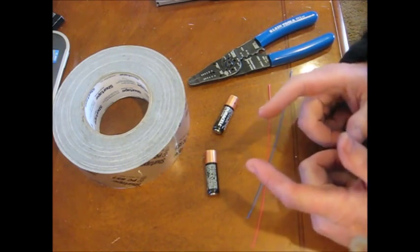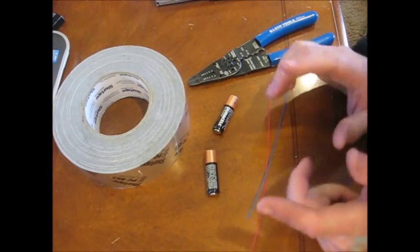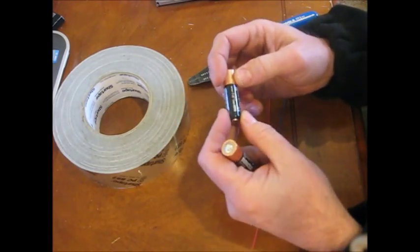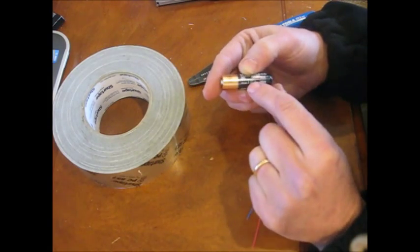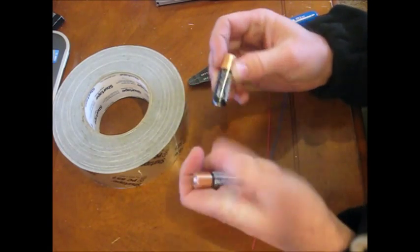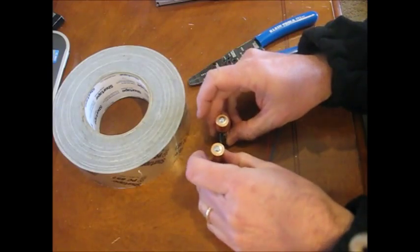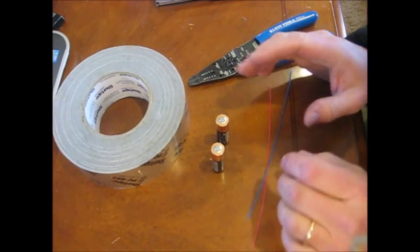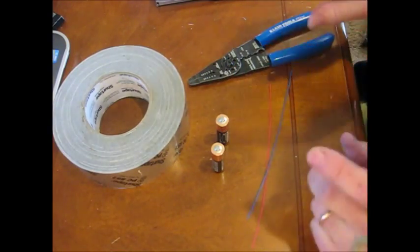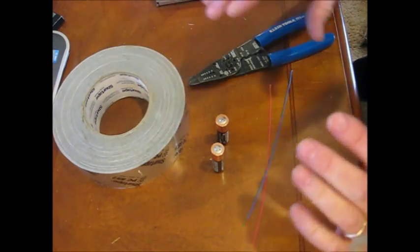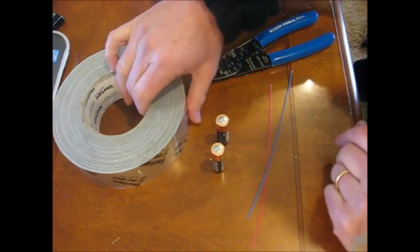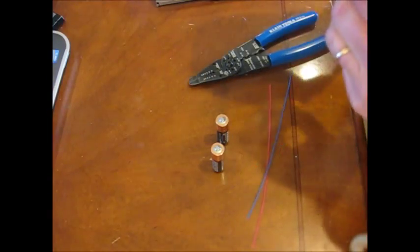Most batteries are 1.5 volts, if you can see right here, that's what these say. These are just your standard AA batteries. You can do this with AAAs, you can do this with Cs, you can do this with Ds. So we're going to make an alternate battery source because I don't have any D batteries.